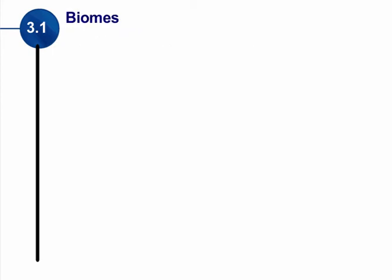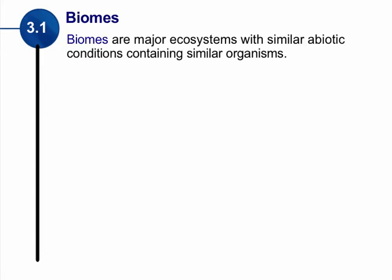Let's look at biomes. A biome is a major ecosystem with similar abiotic conditions and similar organisms — similar temperature, precipitation, and similar organisms, meaning the same types of plants and animals. On earth, there are many different biomes.